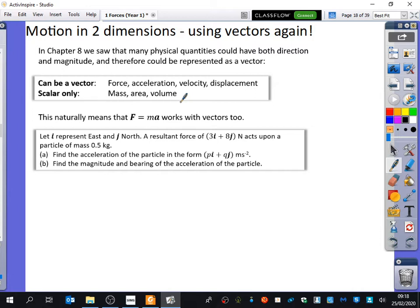So because acceleration can be a vector, it means that we can also change some of our equations to become vector equations. So I've said this naturally means that F equals ma works with vectors too. Now, it's not necessarily clear here, but our normal equation is F equals ma. Our vector equation is F equals ma. Why have I not underlined the m? It's scalar. The mass is not a vector quantity, whereas the force is and the acceleration is.